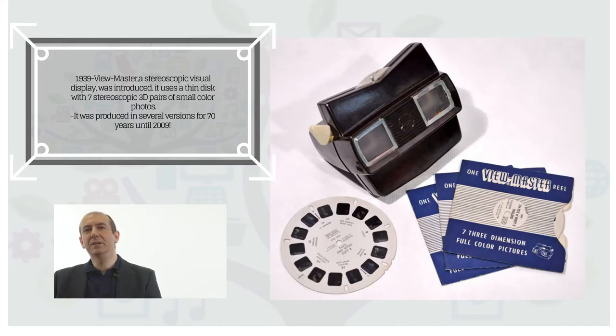But just one year after, in 1939, there was a device called ViewMaster. It was essentially a stereoscopic visual display for both eyes that used a thin disc with seven stereoscopic 3D pairs of small color photos. This device was very successful. It was produced for 70 years in several versions until 2009, and I'm sure many of you have tried one of these devices.